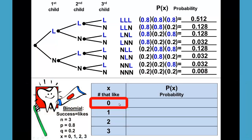Now the first X that we have is that none of the children like the toothpaste and we have that one highlighted for us. So that probability is 1 times 0.008 which gives us 0.008.